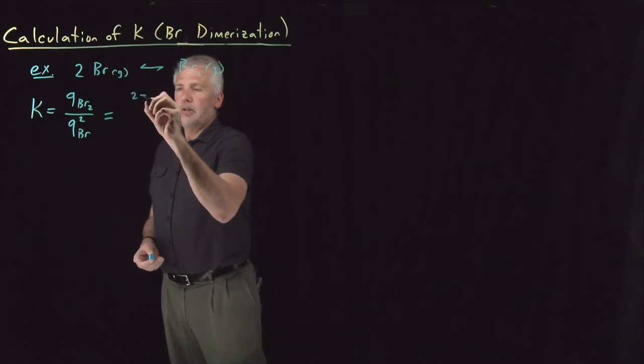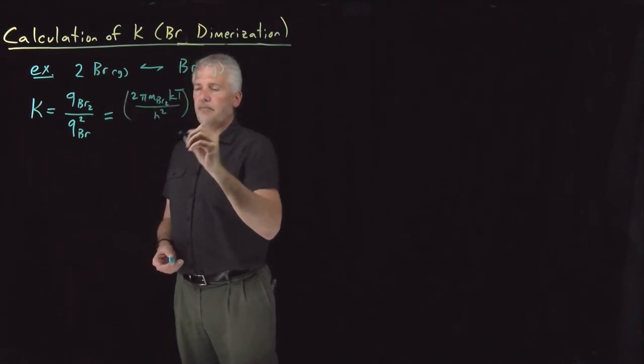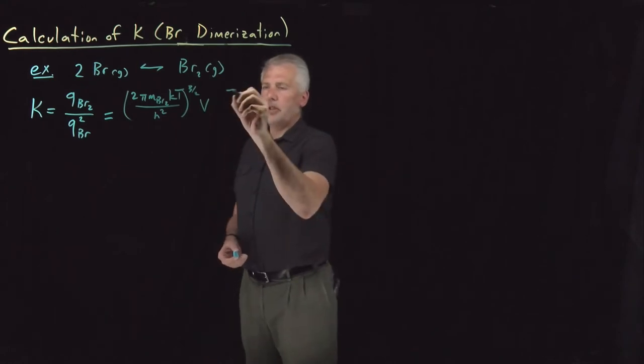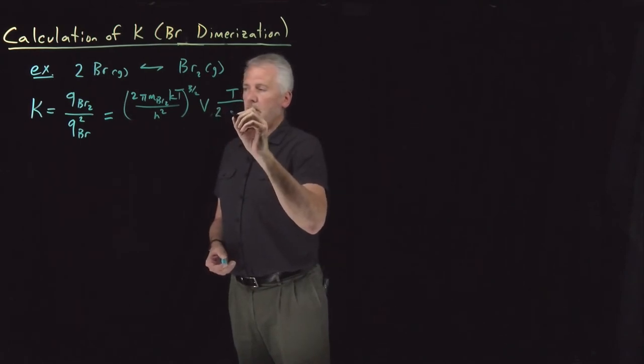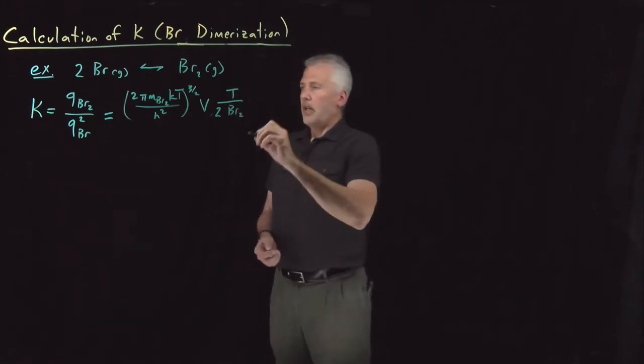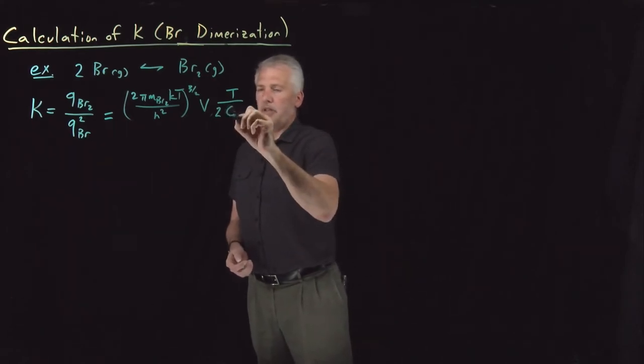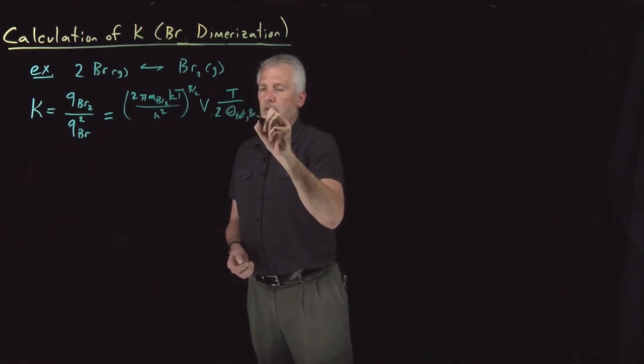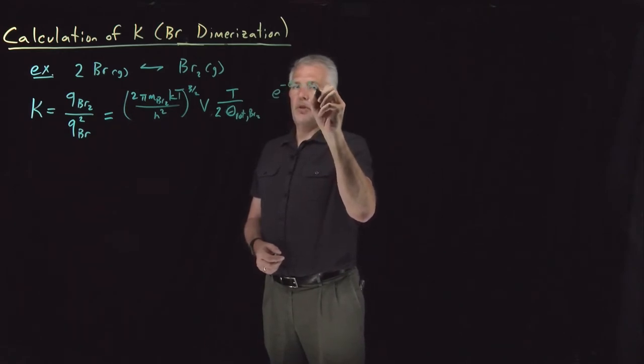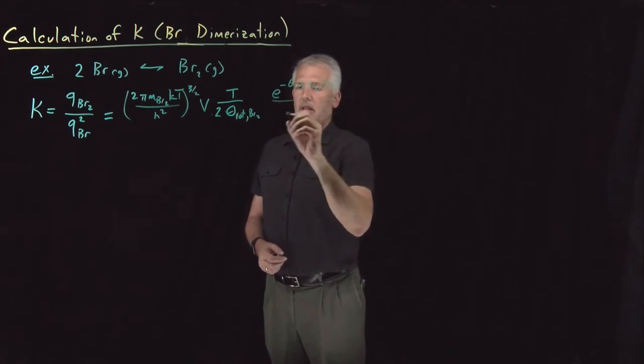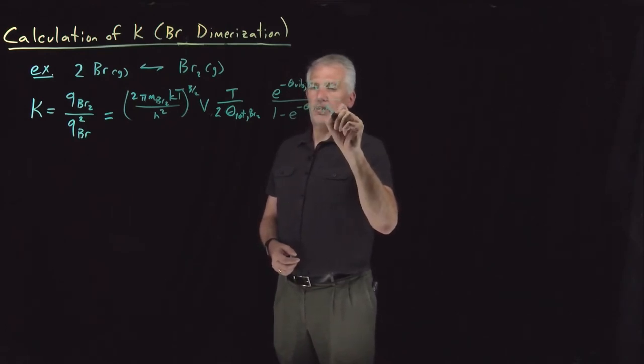So for Br₂, I've got a translational component, I've got a rotational component that looks like temperature divided by, and I'll just say the symmetry number for bromine is 2. I've got a vibrational component. Sorry, this should be rotational constant for Br₂. So still in the numerator, I've got a vibrational component, e to the minus vibrational temperature of Br₂ over 2kT over 1 minus an exponential of the vibrational temperature of Br₂ over kT.